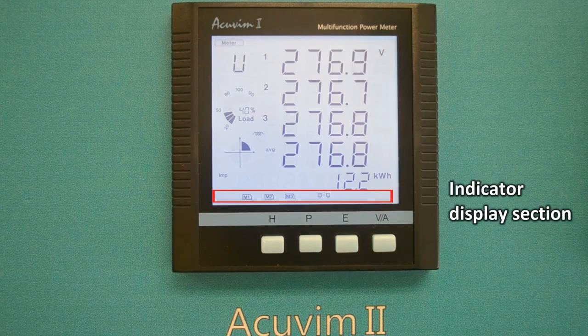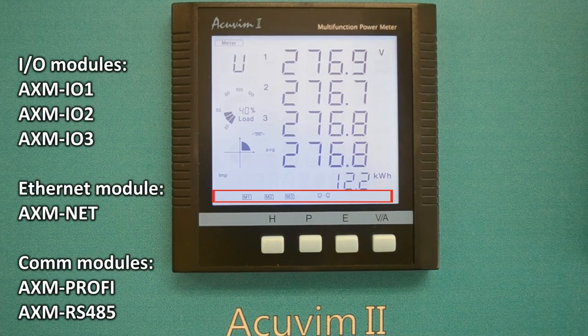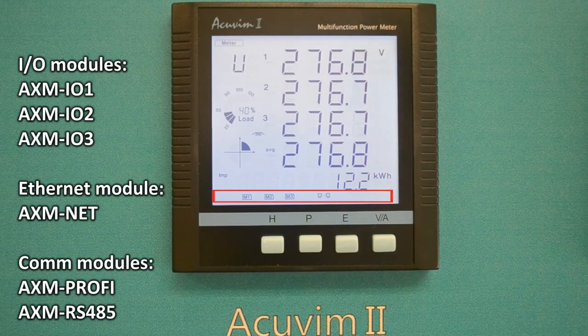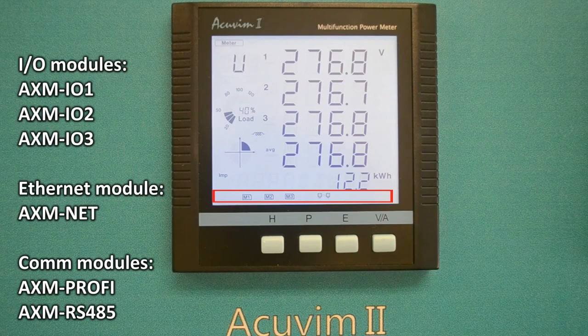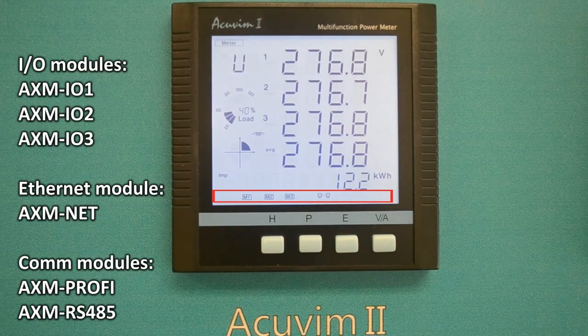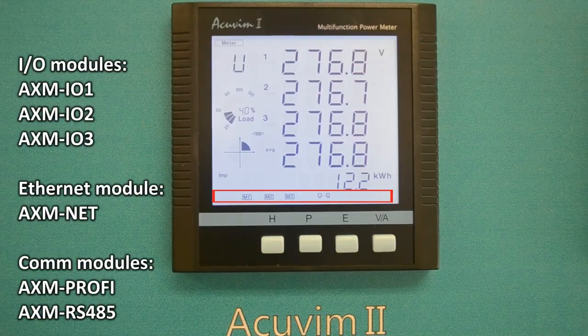In the indicator display section, you will find the I.O. and communication icons for our AXM I.O.1, I.O.2, and I.O.3 modules, as well as our AXM-Net Ethernet module.